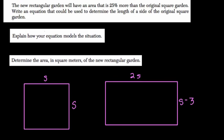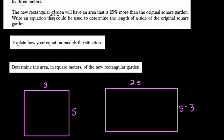Let's see what they want us to do. The new rectangular garden will have an area that is 25% more than the original square garden. So the original area is just what? Well, to find the area of the square, you multiply S by S or S squared.